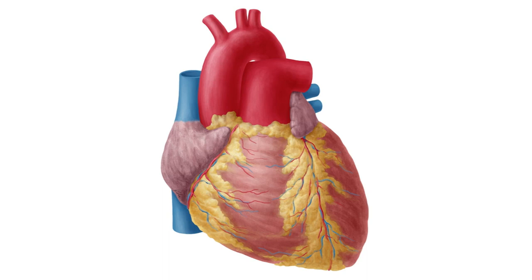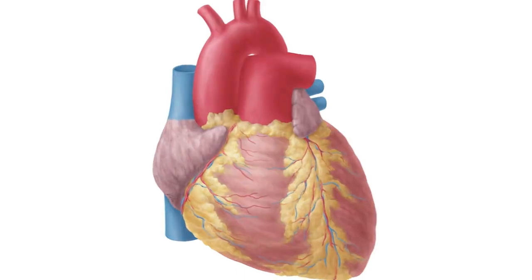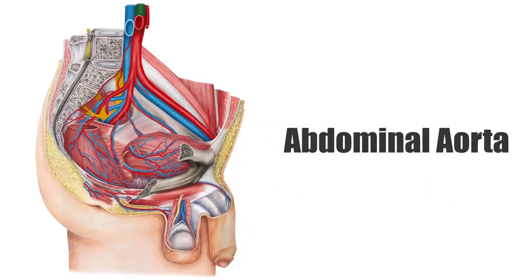At the left subclavian artery, it becomes the thoracic aorta. After the thoracic aorta comes the abdominal aorta. The abdominal aorta, the largest artery in the abdomen, begins at the level of the diaphragm and lies anterior to the vertebrae and runs parallel to the inferior vena cava. It ends where the abdominal aorta divides into its terminal branches.